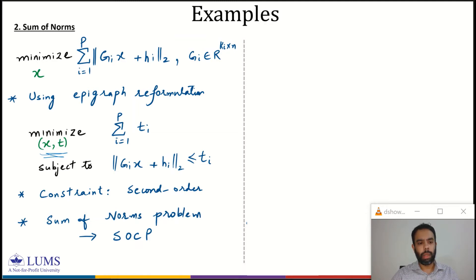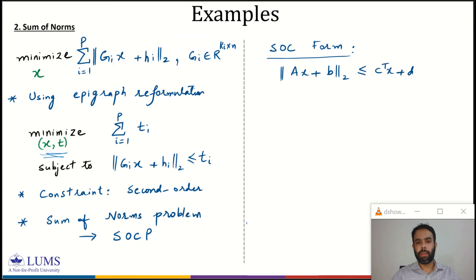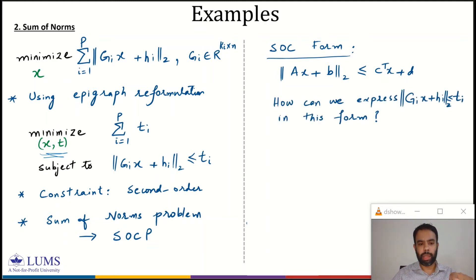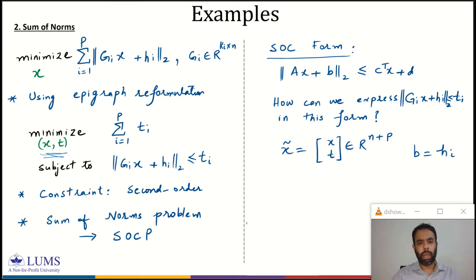We can also learn how to convert this second-order constraint into standard form. The standard form expresses a second-order constraint as: norm of AX + B less than or equal to C^T X + D. The question is how we can express the constraint norm of G_i X + H_i less than or equal to T_i in this standard form.